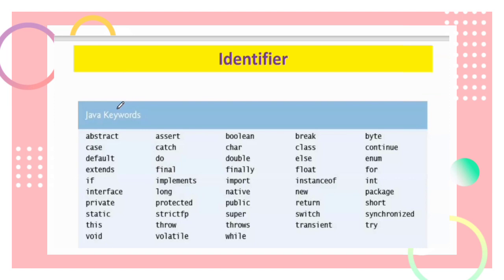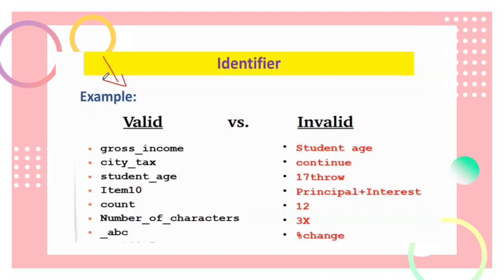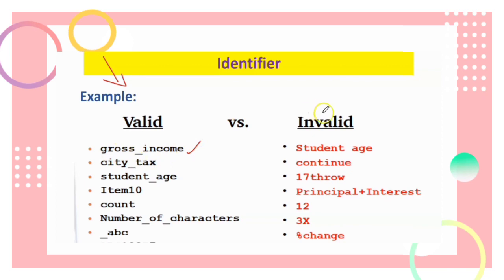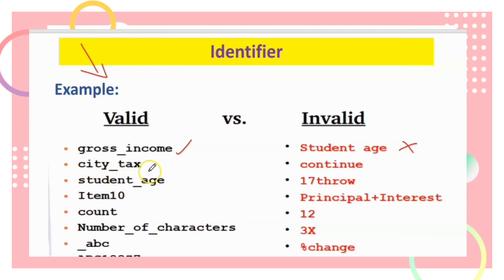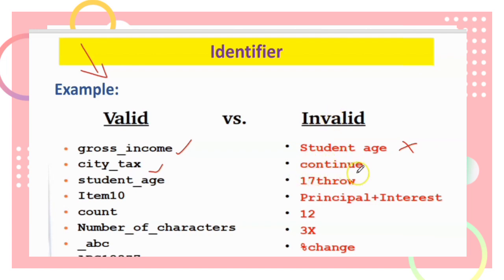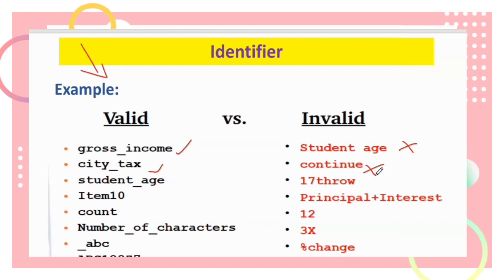Java keywords cannot be used as identifiers. Let's see examples of valid and invalid identifiers. 'gross_income' is valid. 'student h' is invalid because it contains a space. 'city_tags' is valid. 'continue' is invalid because it is a Java keyword.